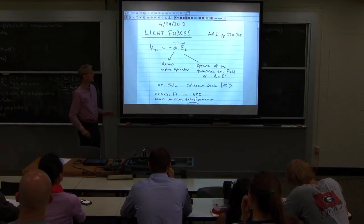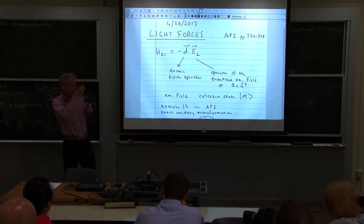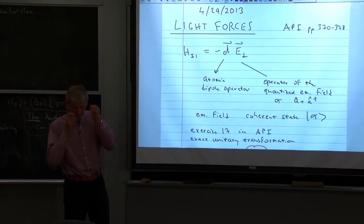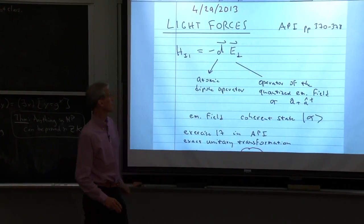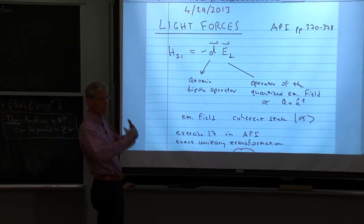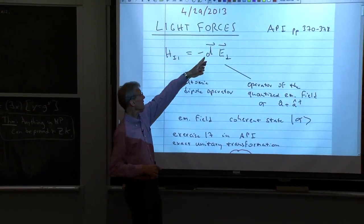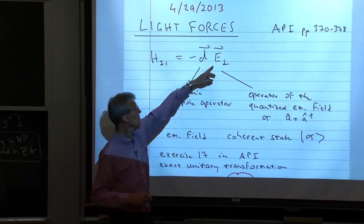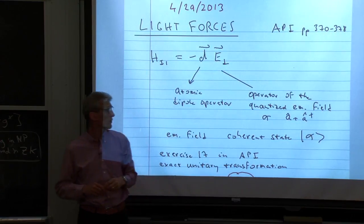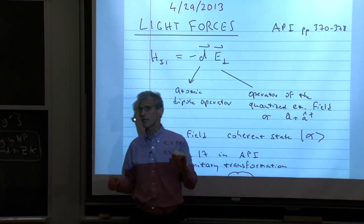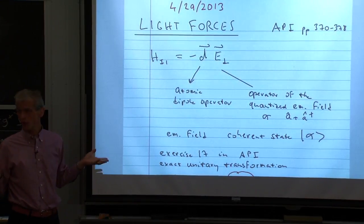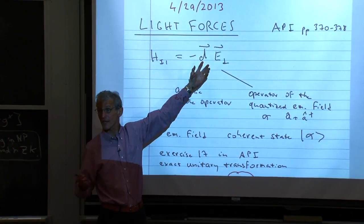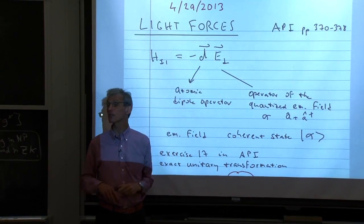Today is conceptually a simple lecture because I'm not really introducing subtleties of quantum physics. We know our Hamiltonian — the dipole Hamiltonian. This is the fully quantized Hamiltonian of how atoms interact with the electromagnetic field. It's fully quantized because E-perpendicular is the operator of the quantized electromagnetic field, and it's the sum of a plus a-dagger. When it comes to forces, it's fairly simple: the force is nothing else than the gradient of this energy.